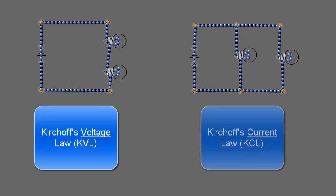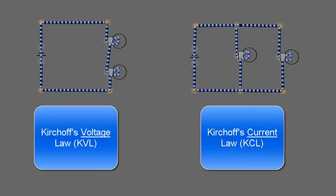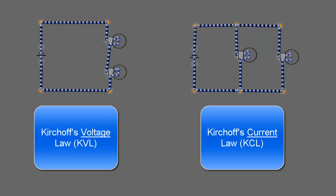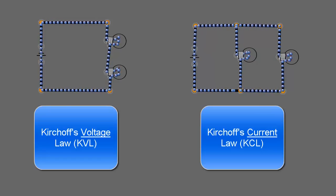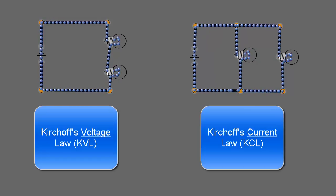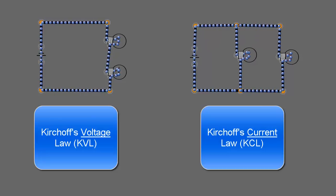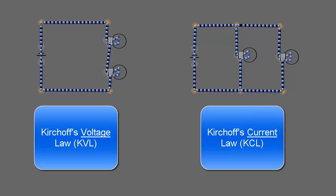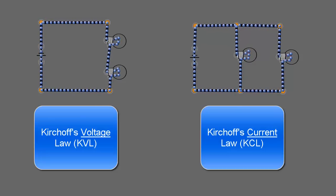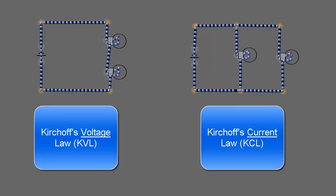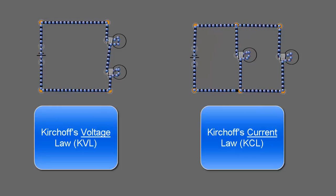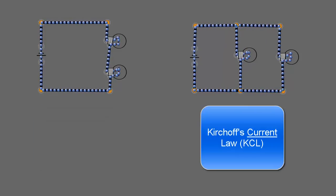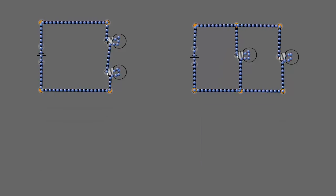For solving a series circuit, a very helpful law is Kirchhoff's Voltage Law. Kirchhoff's Voltage Law tells us that the sum of the voltages in a series circuit is zero — but for simple circuits, that's the same as saying the voltage across R1 and R2 equals the power supply voltage.